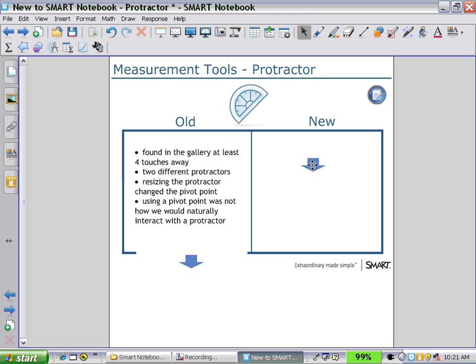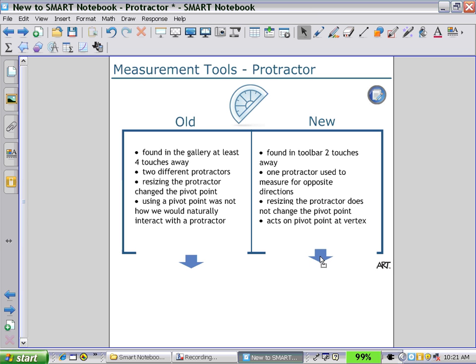In the newer version, we found how easy it is that in two touches, we could have a protractor onto the workspace. The one protractor could be used to measure in opposite directions. Resizing the protractor did not change the pivot point, which is a very good new feature to add. And it acts on a pivot point at the vertex.